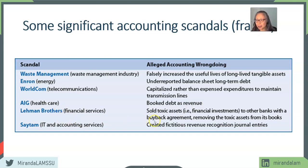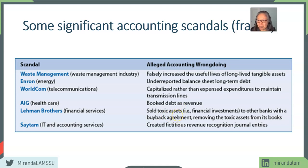Lehman Brothers, a financial services firm, sold toxic assets to other banks with a buyback agreement. Toxic assets have much lower value, so they removed these assets from their books so they didn't have to show them. But the buyback agreement should have been reported as a liability. They received relatively small cash but also removed the liability, making the balance sheet look much stronger than it actually was.